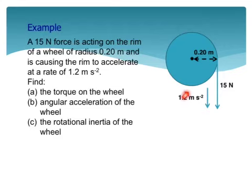Find: (a) the torque on the wheel, (b) the angular acceleration of the wheel, and (c) the rotational inertia of the wheel.